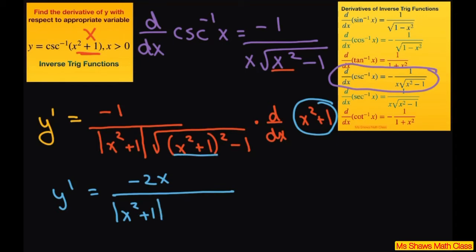Now I'm going to expand this based off the formula a plus b squared equals a squared plus 2ab plus b squared. So that's going to end up being square root of x to the fourth plus 2x squared plus 1 minus 1.